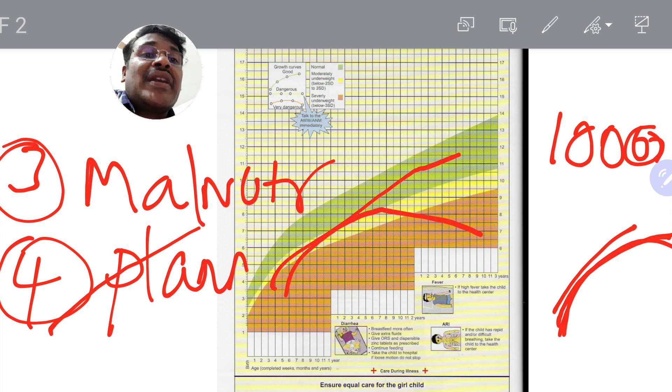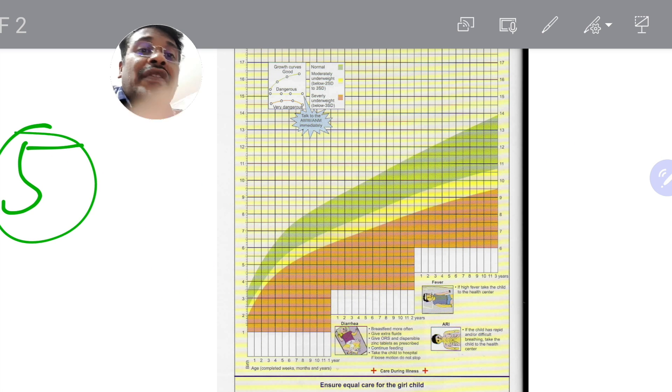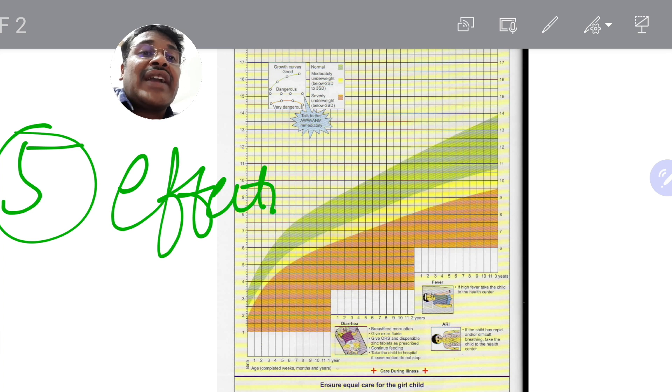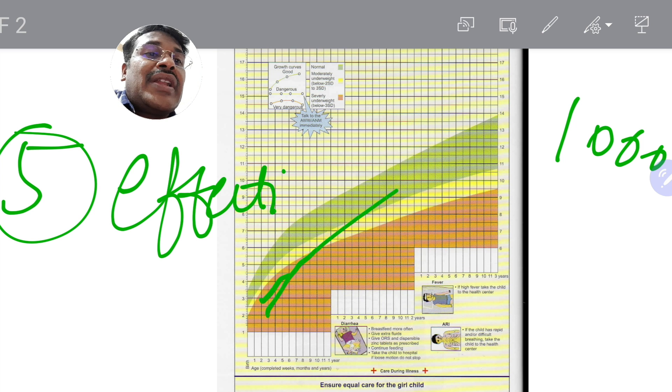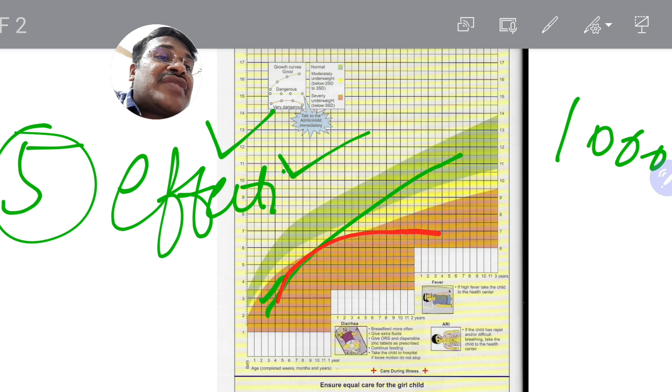And fifth thing is, you have implemented some policy. How do you know the policy is effective or not? The effectiveness of the policy again can be seen with the help of growth chart. Again some thousand children are there, then their common growth curve is going like this, that means the policy plan program is effective. But suppose once again the growth curve doesn't improve, it is still falling like this, then there is some other problem so that should be investigated.